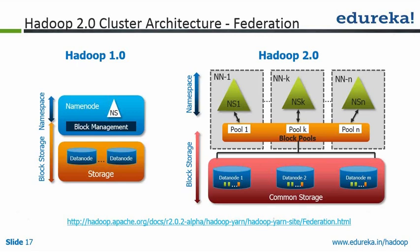So 10,000 data nodes have so much directory structure and metadata that storing it in a single NameNode's RAM was a problem. Instead of creating separate clusters with 5,000 nodes each, what we did was partition the data in the data nodes logically as namespaces, and one set of NameNodes will take care of only that namespace.